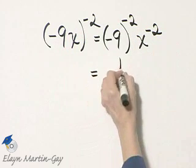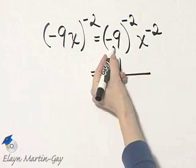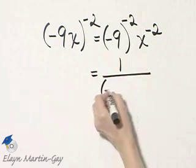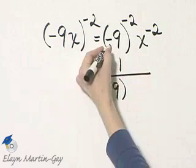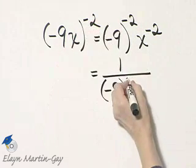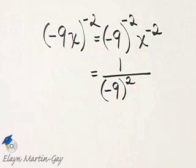So this is 1 over, if I move this to the denominator, it remains negative 9, but the exponent becomes positive 2.